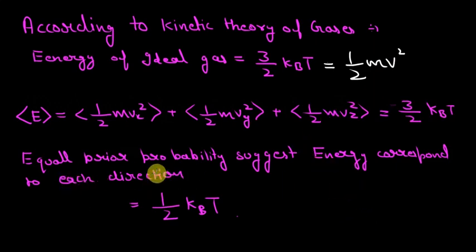Now we say that equal prior probability suggests that energy corresponding to each direction. Now if each coordinate is equally probable then energy correspond to each coordinate will be half kBT because half kBT plus half kBT plus half kBT is equal to 3 by 2 kBT and also remember kB in here is the Boltzmann constant. Now from this we can conclude that energy correspond to each degree of freedom is half kBT. So this is its simple derivation.